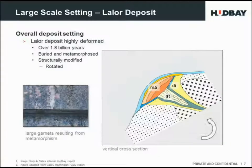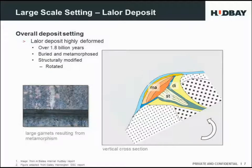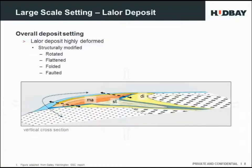Over the 1.8 billion years since the Lawler deposit was formed, it's undergone quite a bit of alteration or change — it's been buried and metamorphosed. The picture on the bottom left shows drill core with coarse-grained garnet crystals; many of the minerals at Lawler have been coarsened by metamorphism. It's also been structurally modified — rotated, flattened, folded, and faulted.